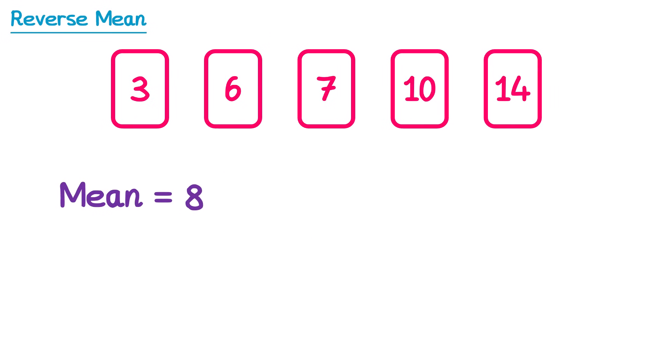This video though is about the reverse mean. For reverse mean questions you'll be told the mean of a set of numbers, and need to use this to find out some other missing information. For example, imagine we didn't know that the final number in this list was the number 14 — just pretend for a moment we didn't. Let's replace 14 with a question mark.